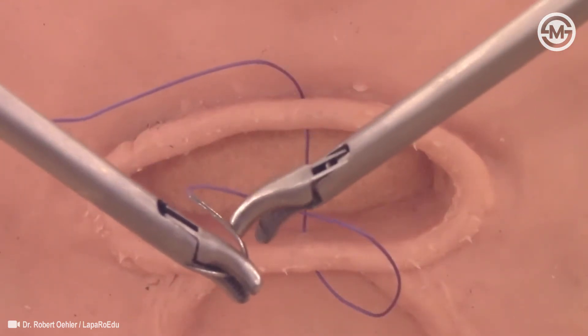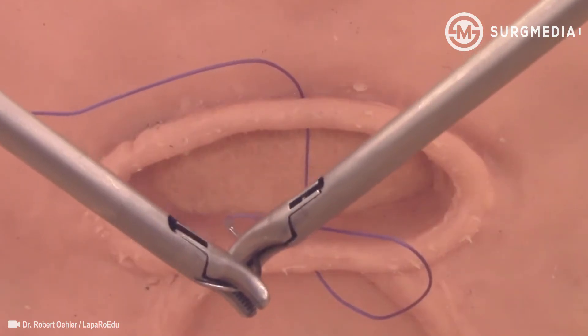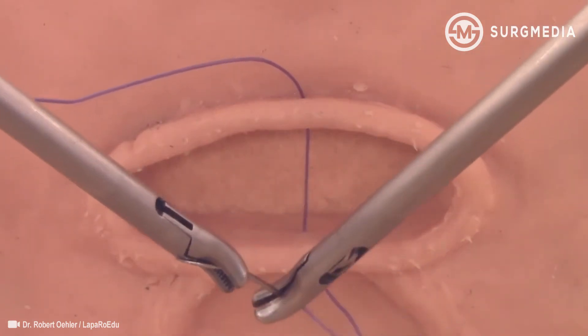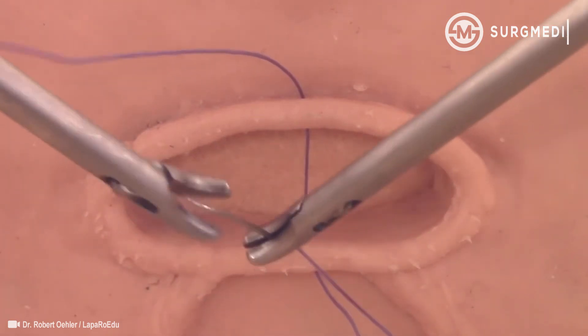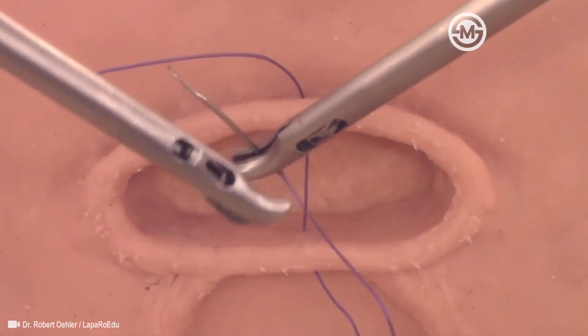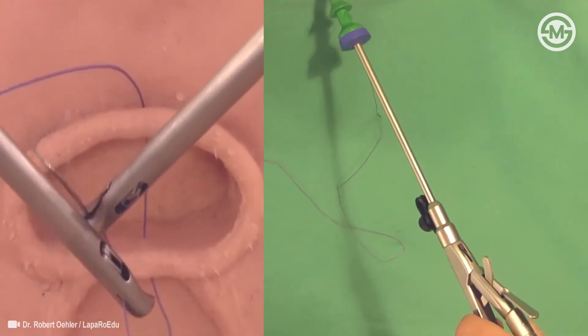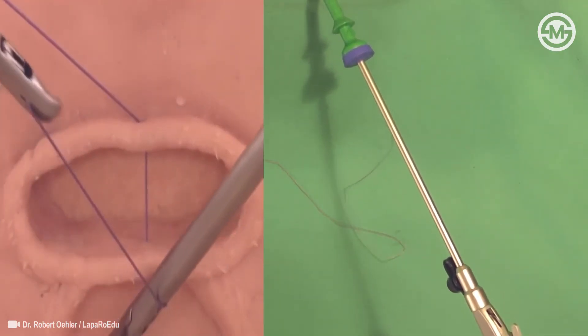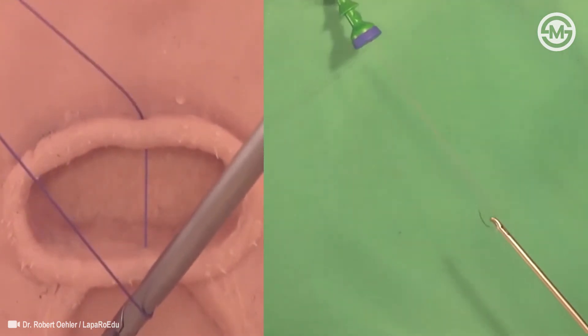Any large needle must be bent straight before extraction through the trocar. Forceful rotation of only the right needle holder will bend the needle sufficiently. The left needle driver now takes the thread. The closed right needle holder is placed near the exit point of the posterior stitch as a guide for the thread to avoid tearing the vaginal cuff. The bent needle can now easily be extracted through the 5mm trocar.